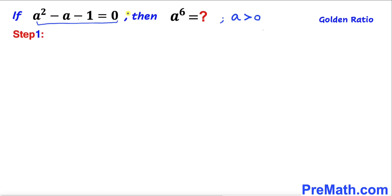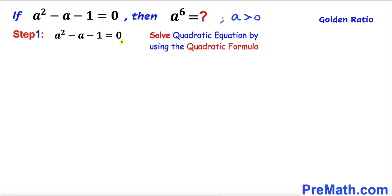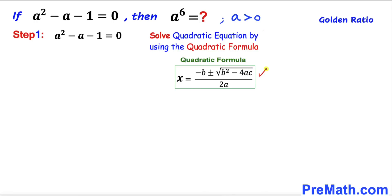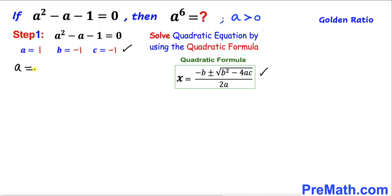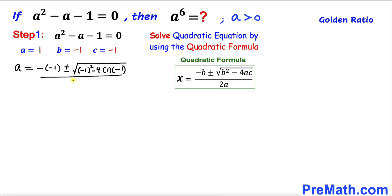Let's focus on this given quadratic equation. We are going to solve it using the quadratic formula. Here we can see our a-value is 1, b-value is negative 1, and c-value is negative 1. Now let's go ahead and substitute these values in the quadratic formula: a equals negative b, which is negative 1, plus or minus square root of b² — that is (-1)² — minus 4 times a (which is 1) times c (which is negative 1), all divided by 2 times 1.